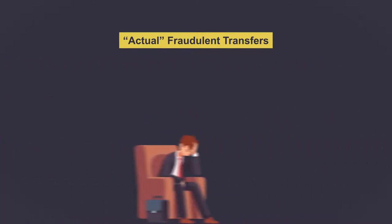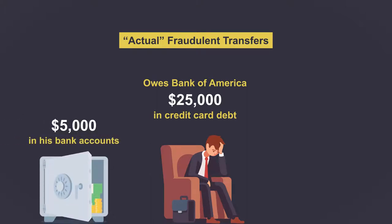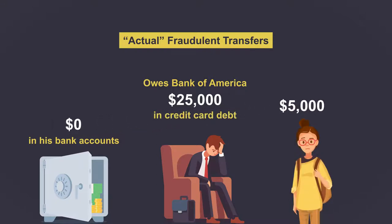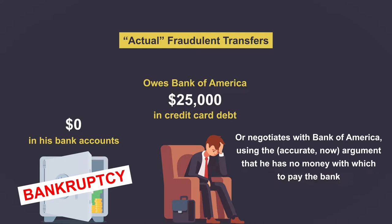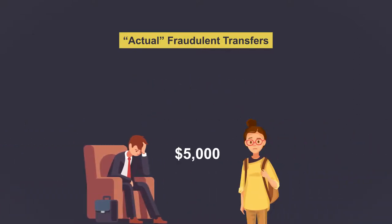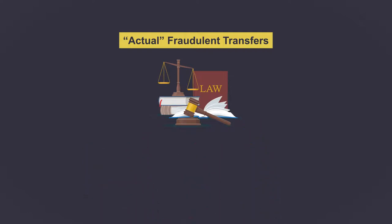For example, imagine that Joe owes the Bank of America $25,000 in credit card debt. He has only $5,000 in his bank accounts. He gifts the $5,000 to his daughter Jane and then declares bankruptcy, or negotiates with Bank of America using the — accurate now — argument that he has no money with which to pay the bank. This is a classic actual fraudulent transfer, and it can be undone by a court.